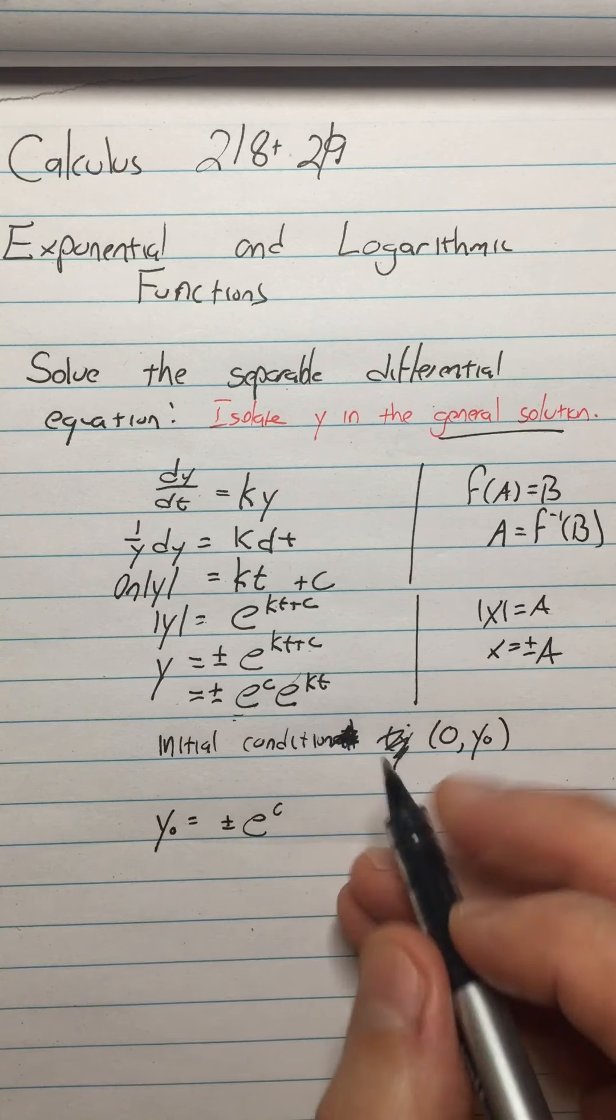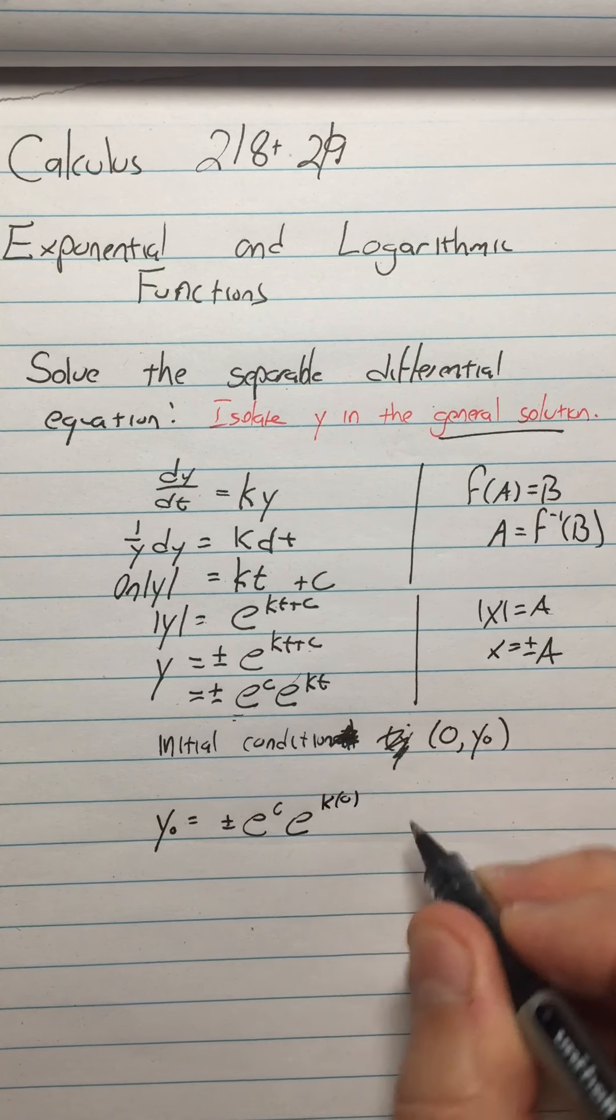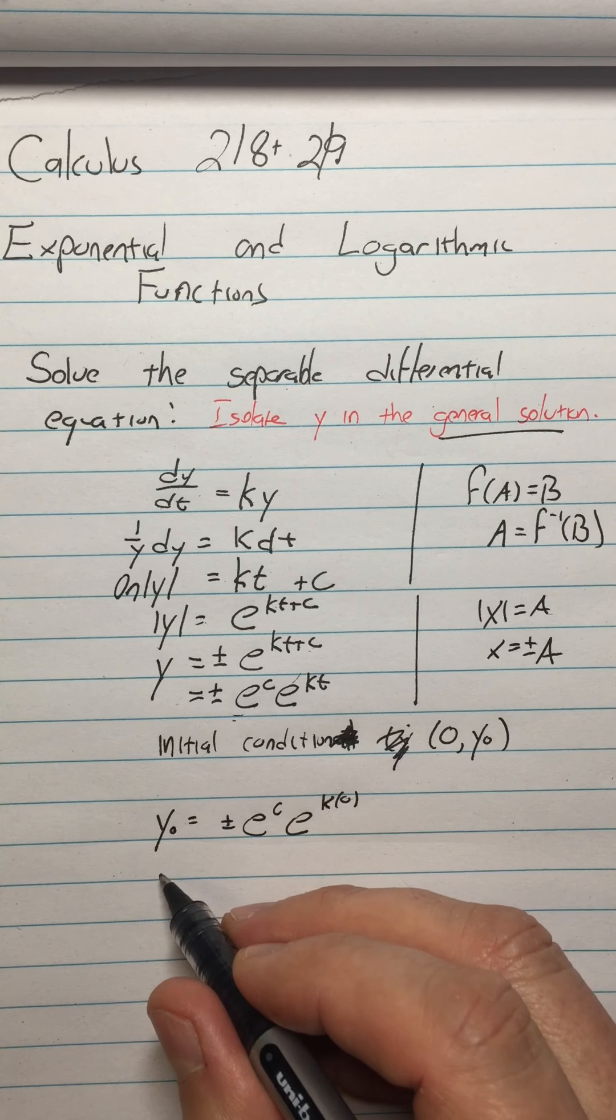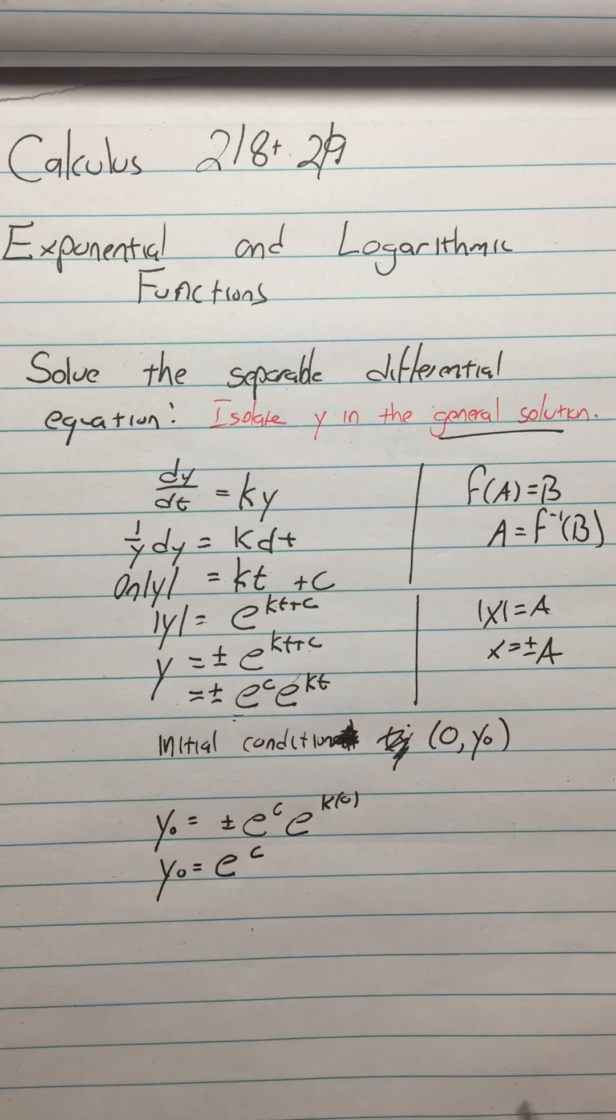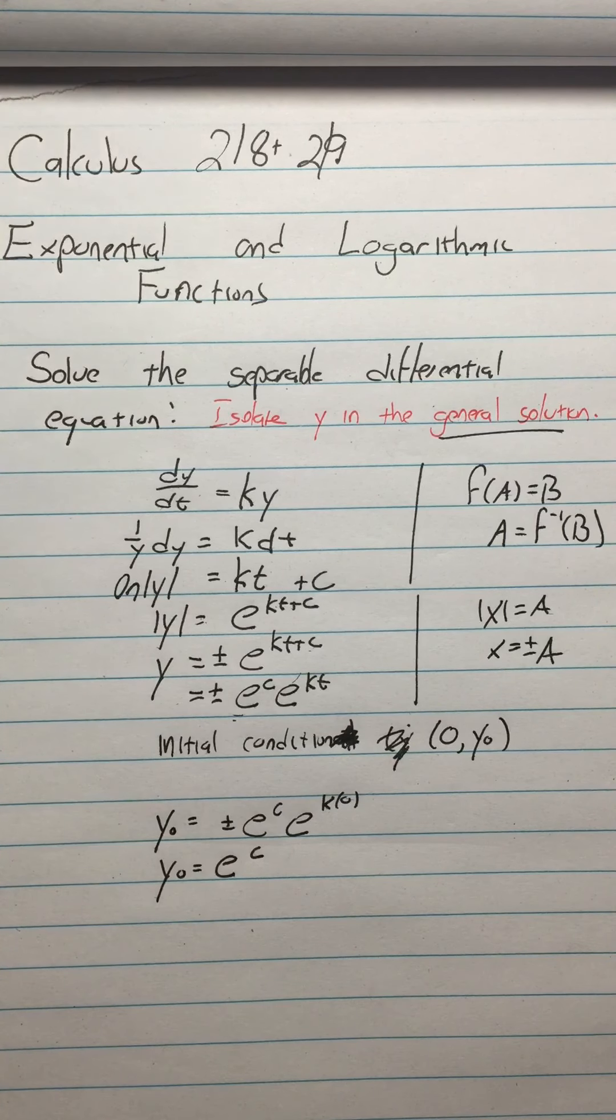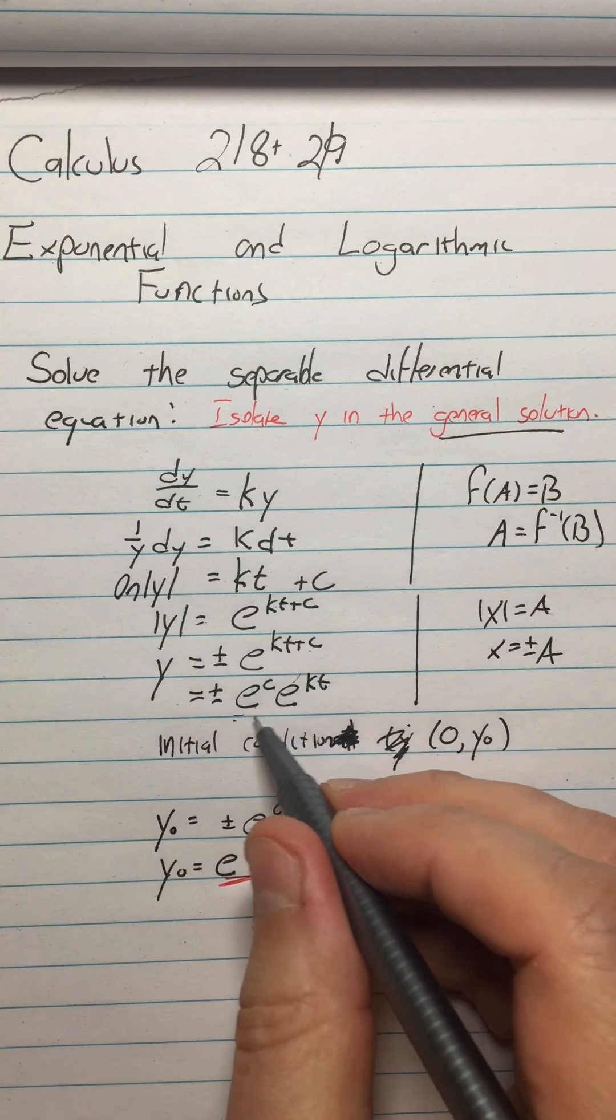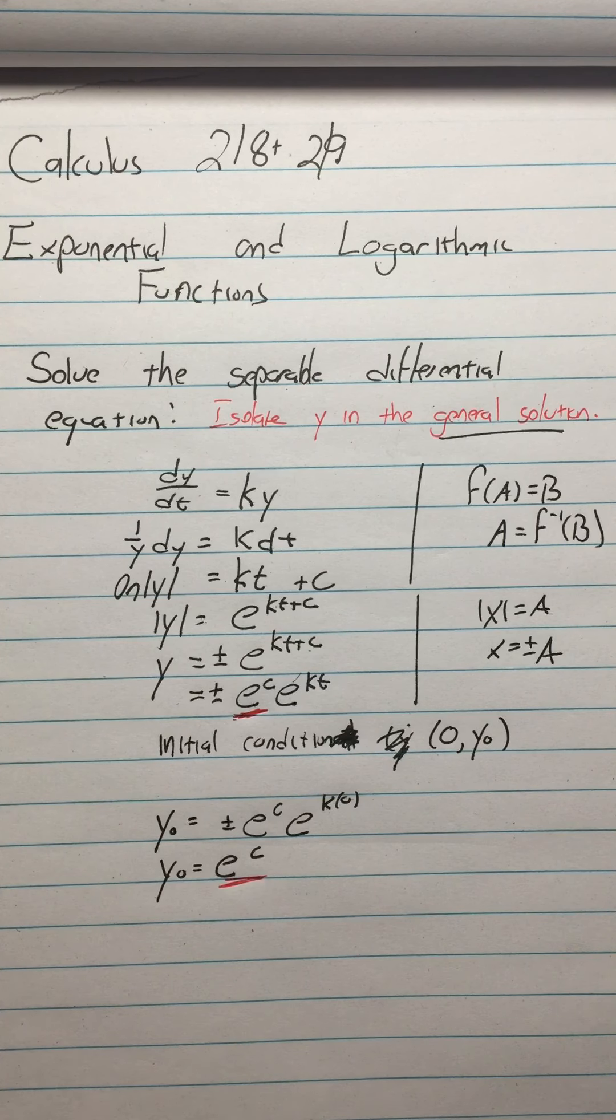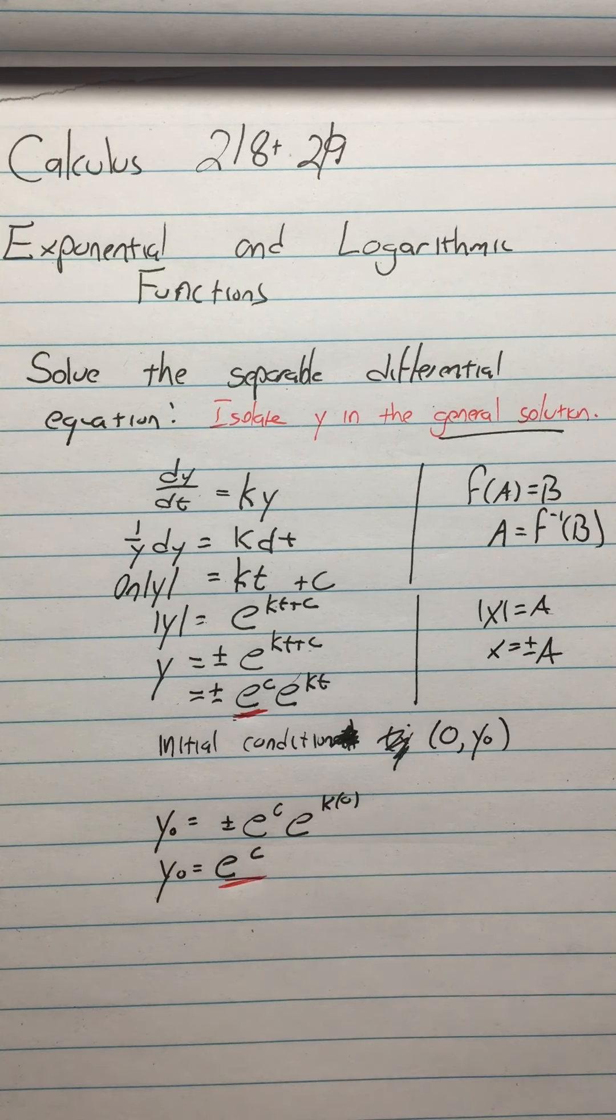Then when I'm down here, and I'm using T equals zero, so I have E to the C times E to the K times zero. And E to the zero is one, so I have just Y zero equals E to the C. So now, this E to the C, I haven't manipulated or changed it or anything. This E to the C is this E to the C.